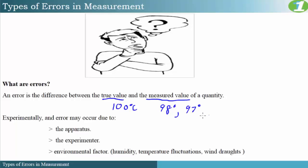This variation in measurement can be due to a number of factors. For example, the variation could be due to something being wrong with the equipment itself, or it could be due to poor manipulation skills of the experimenter, or even due to some environmental factors. So experimentally, an error may be due to either the apparatus, the experimenter, or some environmental factors such as humidity, temperature fluctuations, or wind. These three sources fall under the category of two main types of errors.